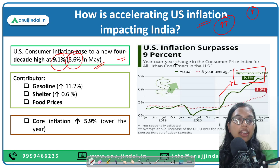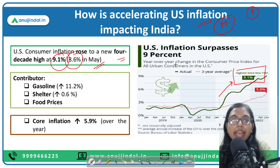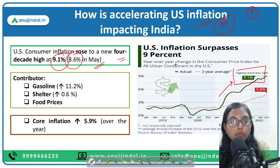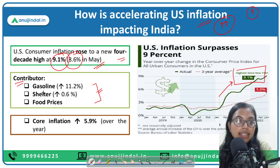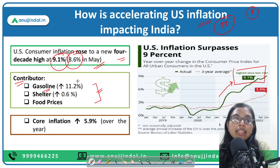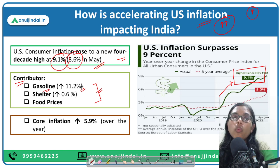This increase in inflation has been adding pressure on the Fed — that is the central bank of the US — to act more aggressively to slow rapid price increases by increasing the interest rate and tightening the monetary policy in their economy. If you talk about the main contributors, the first is the increase in prices of gasoline. There has been an increase of 11.2 percent in gasoline prices.